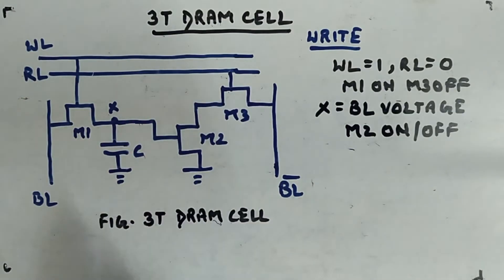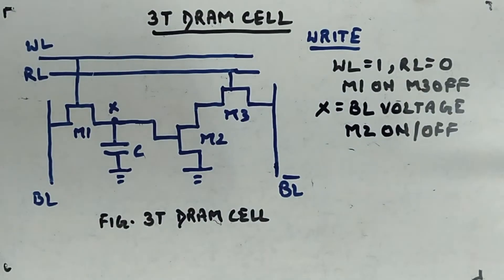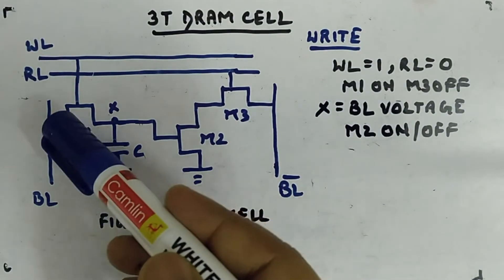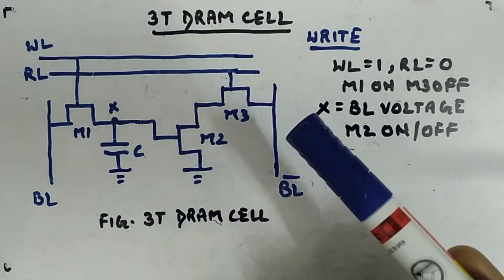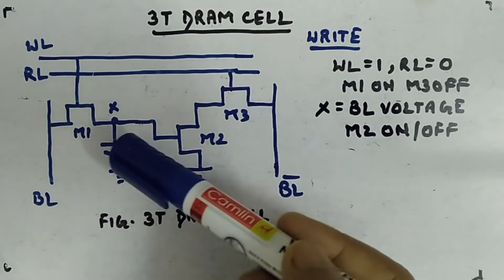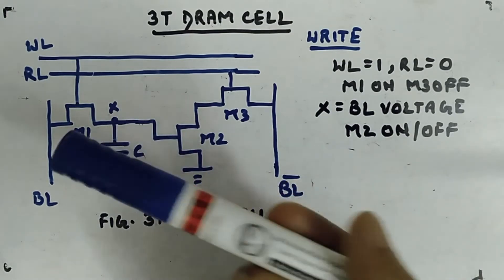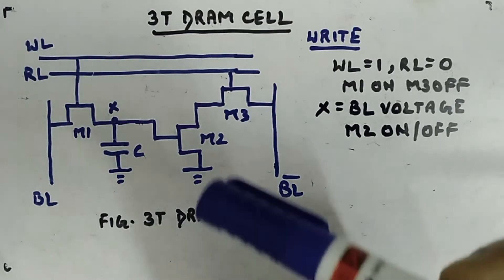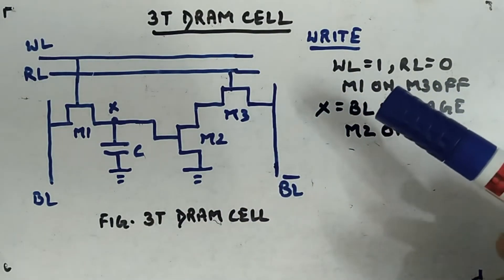If BL is carrying logic high, the capacitor will charge to approximately VDD. If BL is zero, it will discharge to zero volts through M1. So node X will have either logic high or logic low. M2 and M3 do not come into picture when writing data — only M1 is relevant, and through BL it will charge or discharge the capacitor. That is how you write data into the 3T DRAM cell.